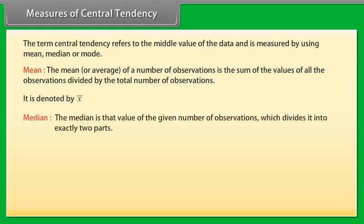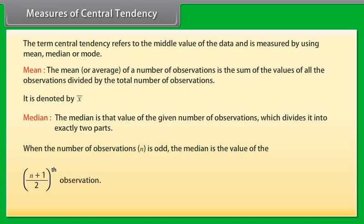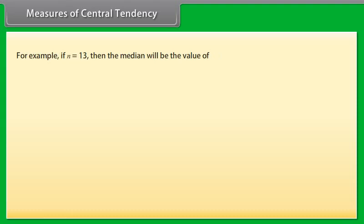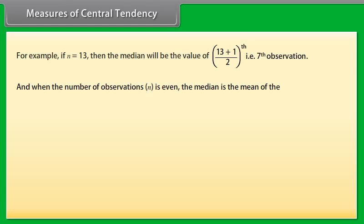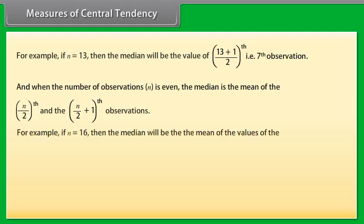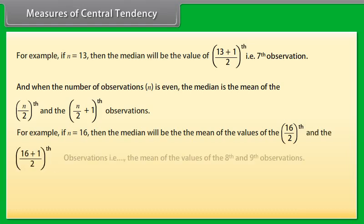Median: The median is that value of the given number of observations which divides it into exactly two parts. When the number of observations N is odd, the median is the value of the (N+1)/2th observation. For example if N equals 13, then the median will be the 7th observation. When N is even, the median is the mean of the N/2th and the (N/2+1)th observations. For example if N equals 16, then the median will be the mean of the 8th and 9th observations.